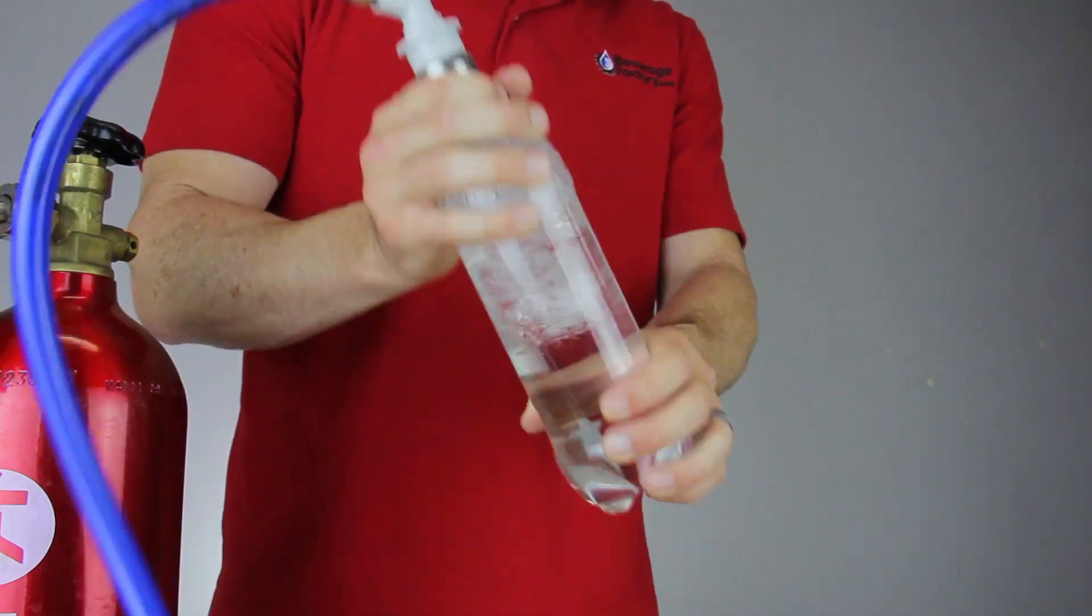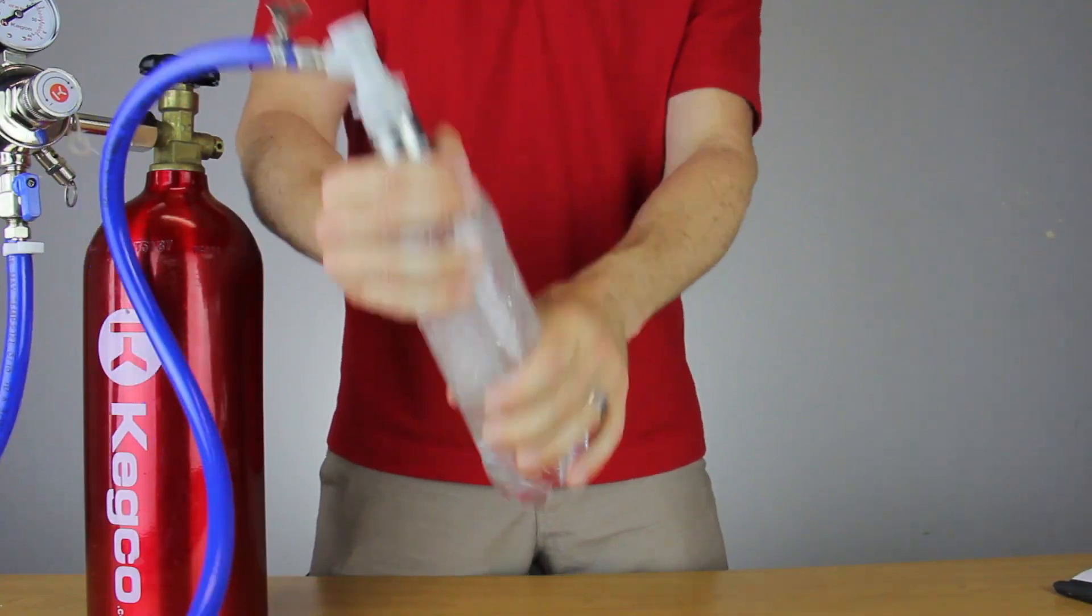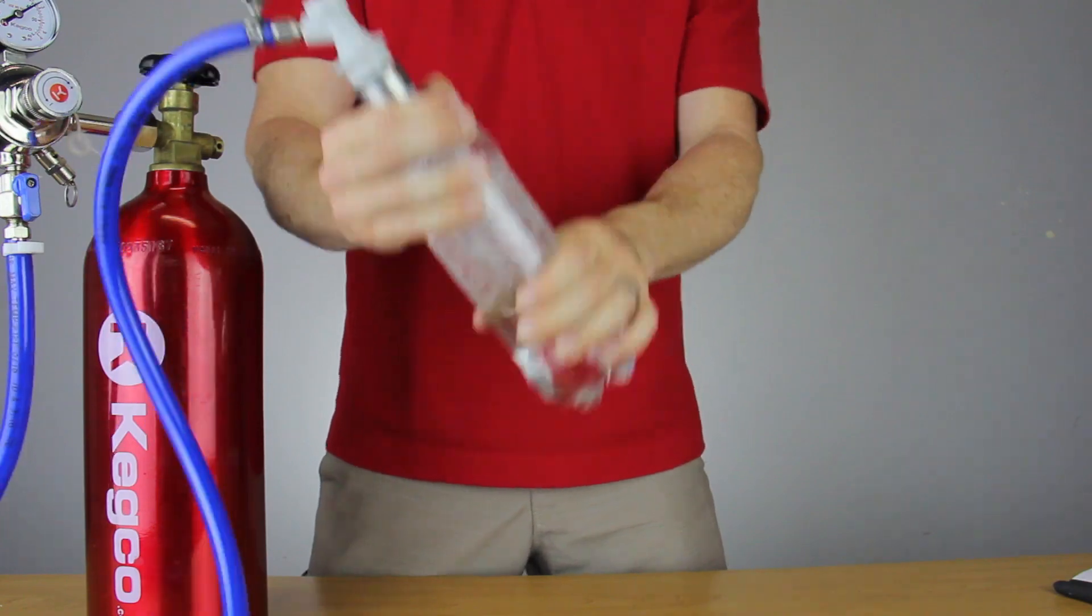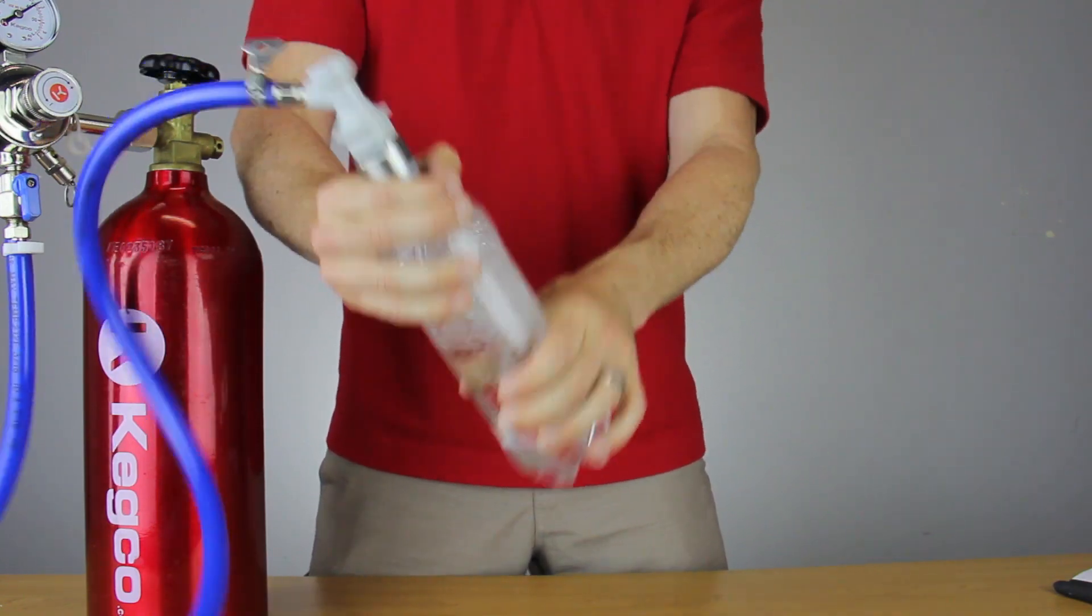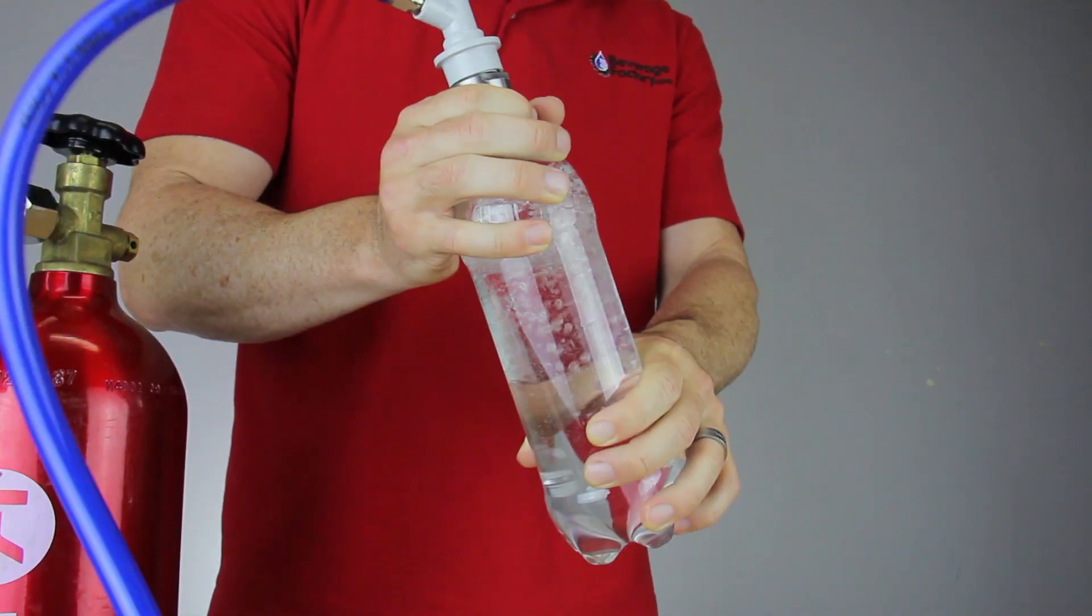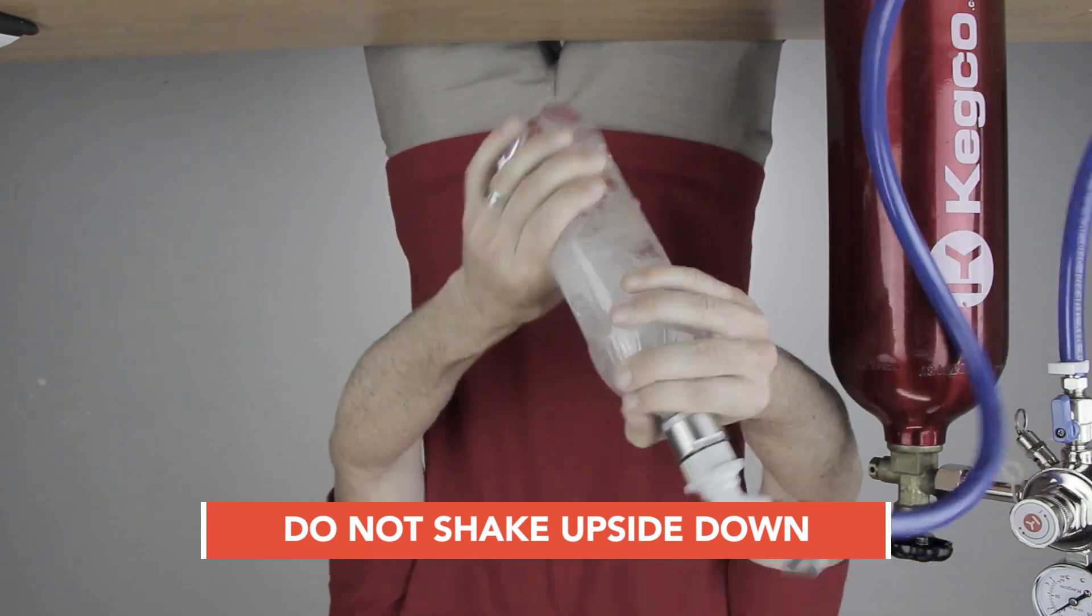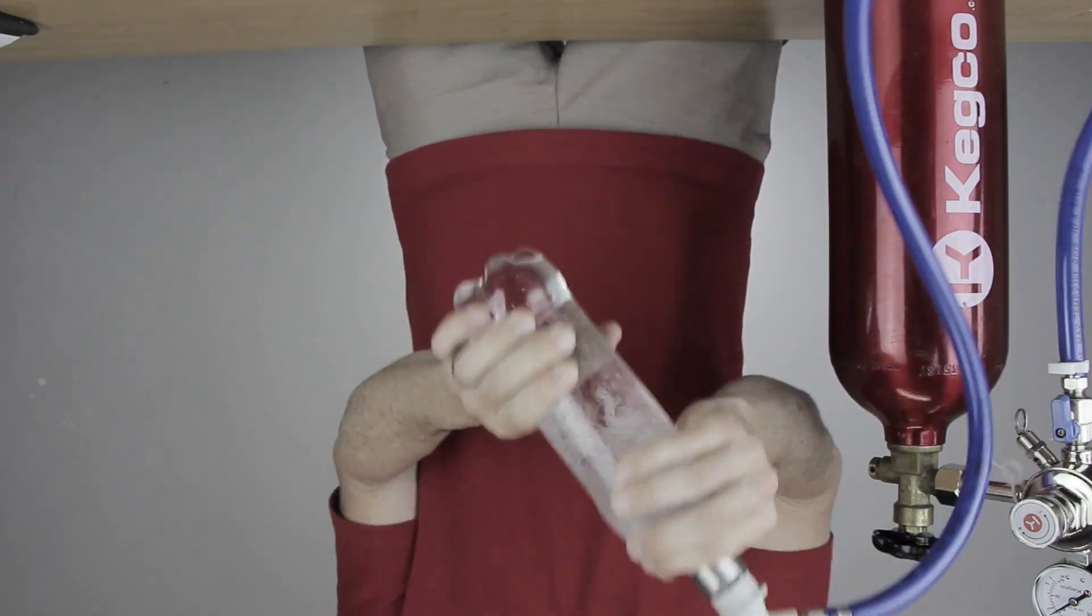Shake the bottle for 20 to 30 seconds to ensure that the CO2 has dissolved throughout the liquid. If you do not properly shake the bottle, the CO2 will remain at the top of the bottle and your beverage will not be fizzy. Shaking upside down can backflow liquid into your gas line and possibly into your regulator.